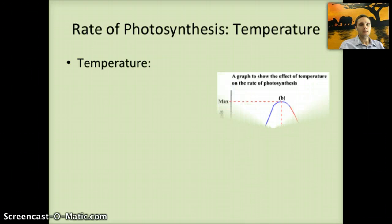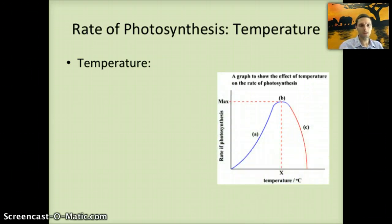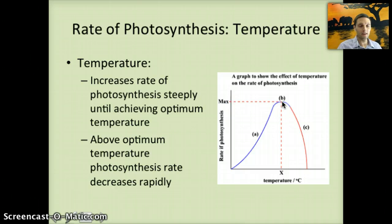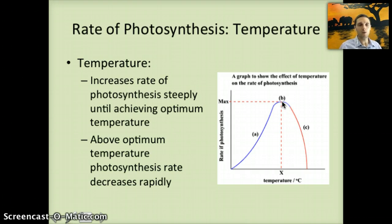Temperature can influence the rate of photosynthesis. As temperature increases, it causes the rate of photosynthesis to increase up to a point, with a steep increase until it reaches the optimum temperature. After that optimum is passed, the rate decreases rapidly. As temperature increases, molecules move around more quickly, giving them a greater chance of interacting with the enzymes needed for photosynthesis — but at high temperatures those enzymes begin to denature, breaking down so they can no longer perform their functions.